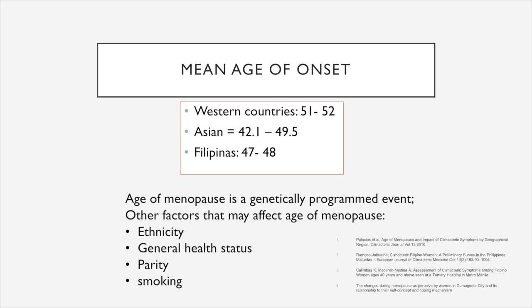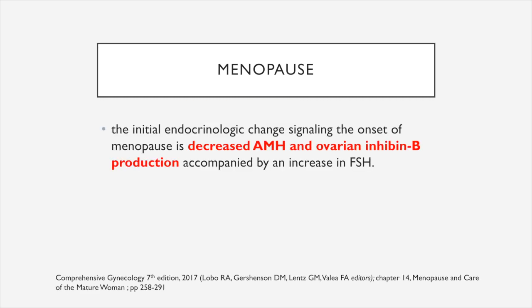Age of menopause is a genetically programmed event. Other factors that may affect age of menopause, other than ethnicity, include general health status, parity, and smoking. The initial endocrinologic change signaling the onset of menopause is decreased anti-Müllerian hormone and ovarian inhibin, accompanied by an increase in FSH.